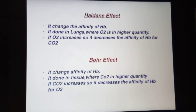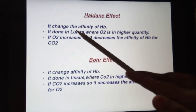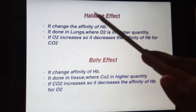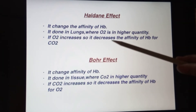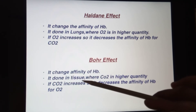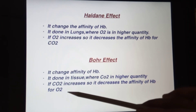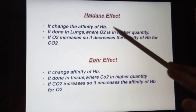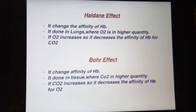Overall, 70 percent of CO2 is transported as bicarbonate and 23 percent as carbamino compound. There are two effects: the Haldane effect and the Bohr effect. The Haldane effect occurs in the lungs where oxygen is in higher quantity — when oxygen increases, it decreases the affinity of hemoglobin for carbon dioxide. The Bohr effect occurs in the tissue where CO2 is in higher quantity — when carbon dioxide increases, it decreases the affinity of hemoglobin for oxygen.